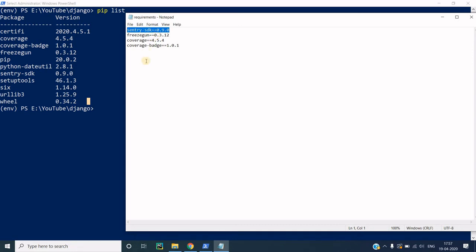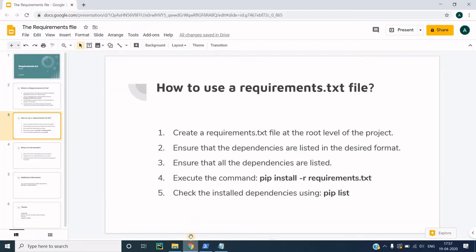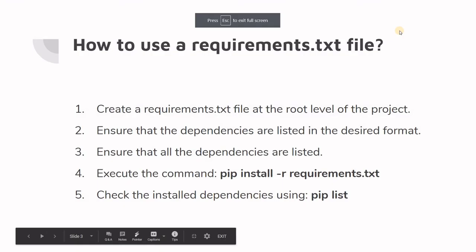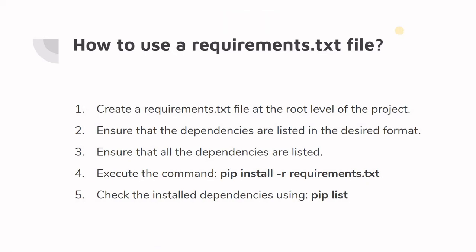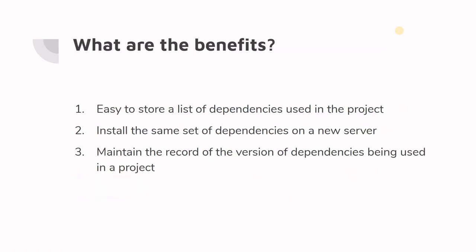Now I'll clear the screen and run pip list to verify whether the requirements were actually installed. Yes, you can see that the list now contains a lot more packages than before. These include the packages I specified in the requirements file plus their own sub-dependencies, which were also automatically installed. We've confirmed the installed dependencies using the pip list command.